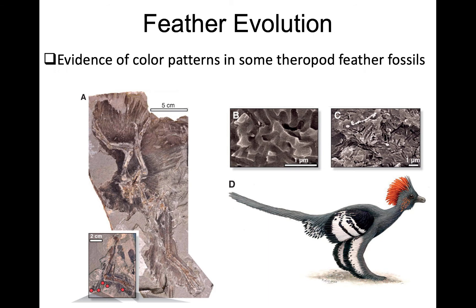Better-preserved fossils show remarkable detail, including evidence of color patterns in some theropod feather fossils. By examining areas under an electron microscope, we can find melanosomes — bodies in cells that store melanin. The structure of the melanin within those melanosomes tells us what colors were possible, reconstructing grays, blacks, browns, and even potentially iridescent colors based on the stacking of melanin in the melanosomes.